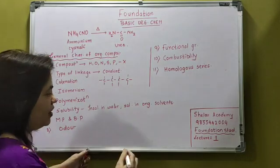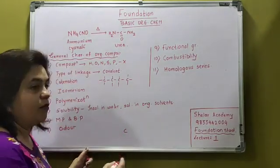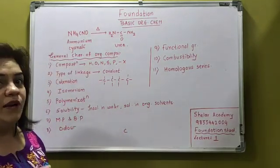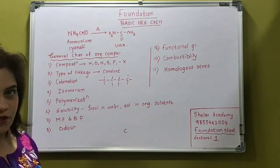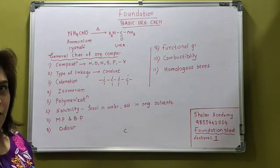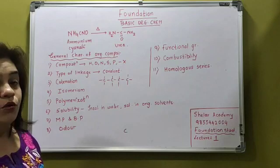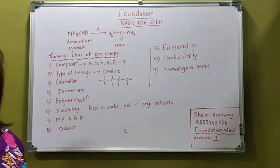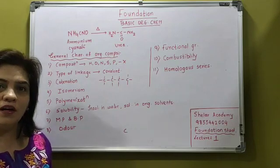Try to understand. What do I mean by catenation? See, carbon - what is the position of carbon in the periodic table? Carbon ka atomic number kitna hai? 6, right? Configuration kya rahe ga? 2, 4.